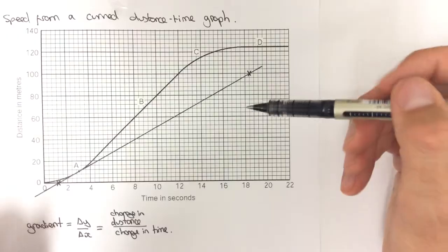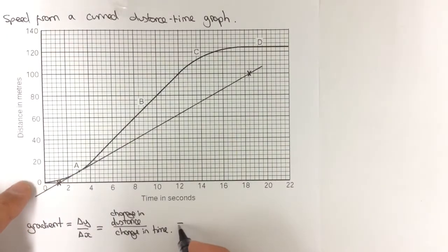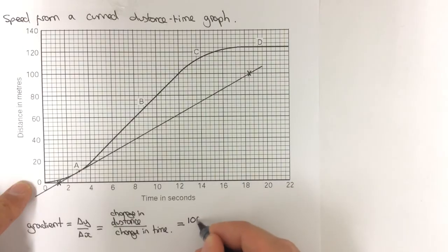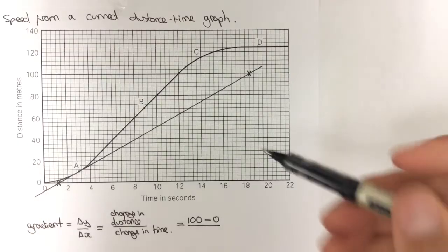So, if I do the change in distance first of all, the distance at the end is 100, and the distance at the start is 0, so the change in distance is 100.